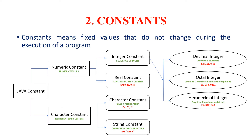We have completed all about tokens. The next fundamental programming structure in Java is constants. Constants mean fixed values and they do not change during the execution of a program. Java constants are divided into two types: numeric constant and character constant. Numeric constants are further divided into integer constant and real constant. Integer constants are sequences of digits, further divided into decimal integers, octal integers and hexadecimal integers.